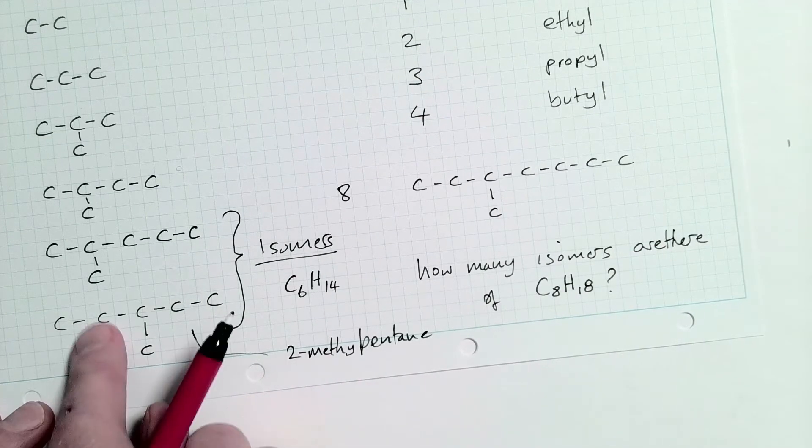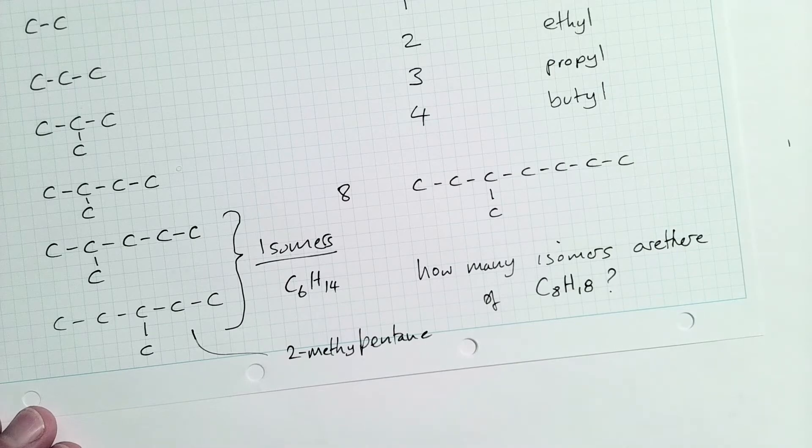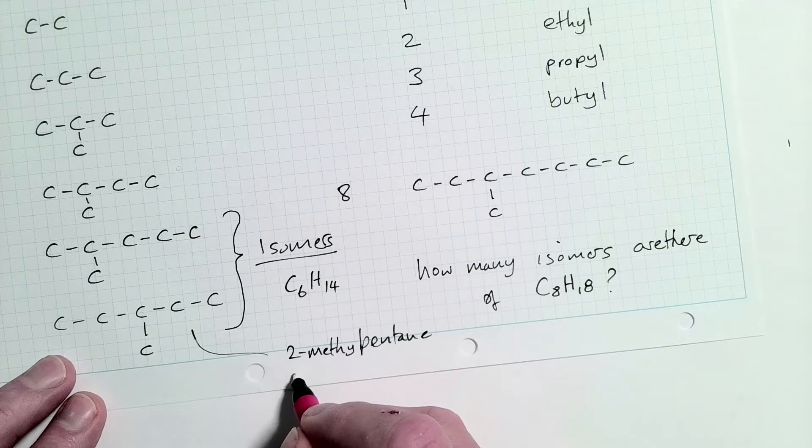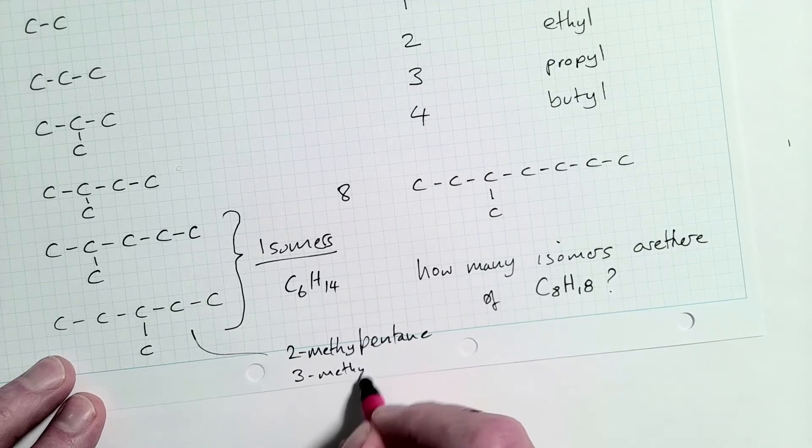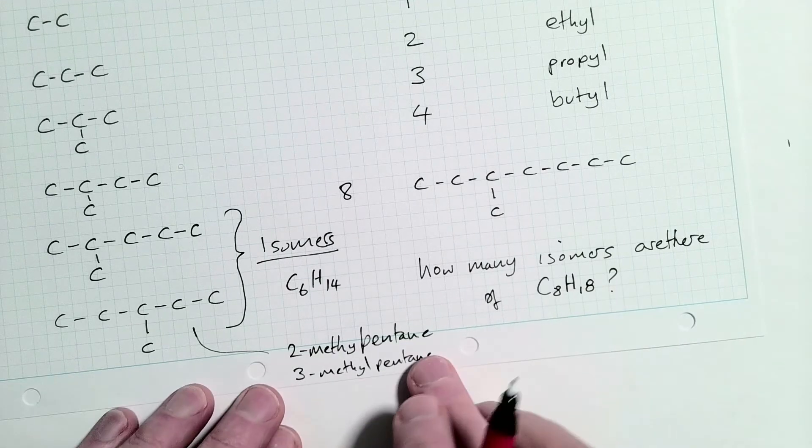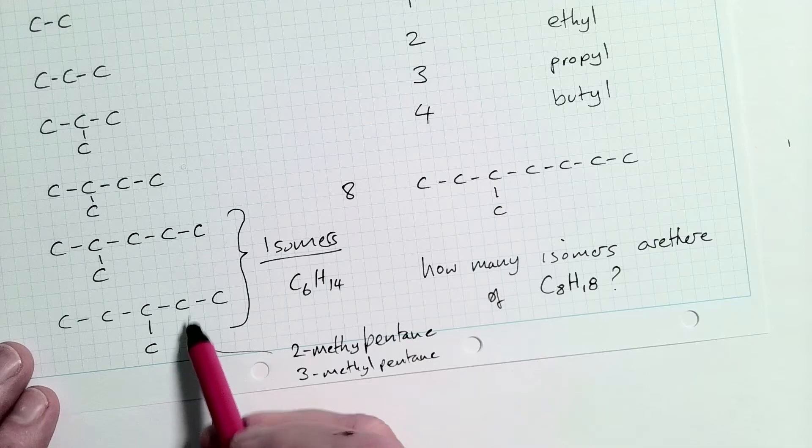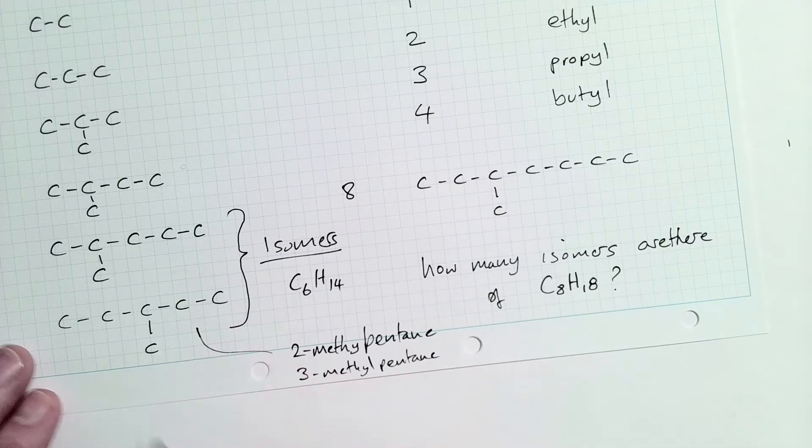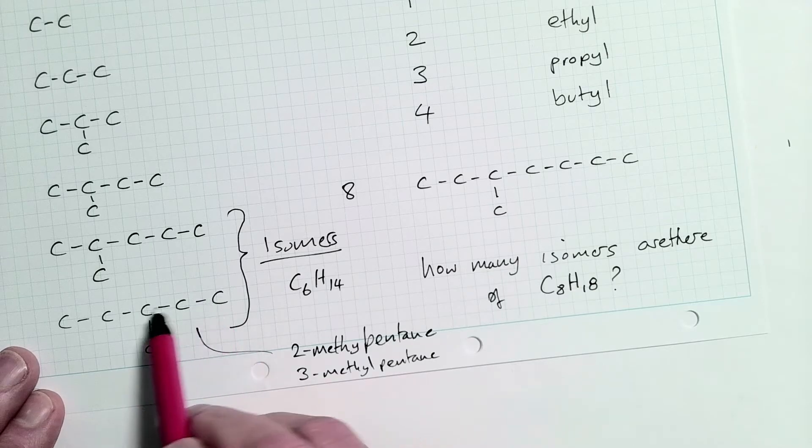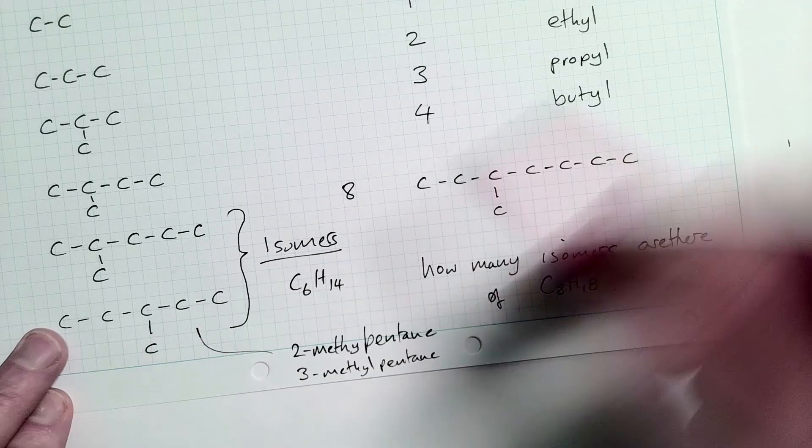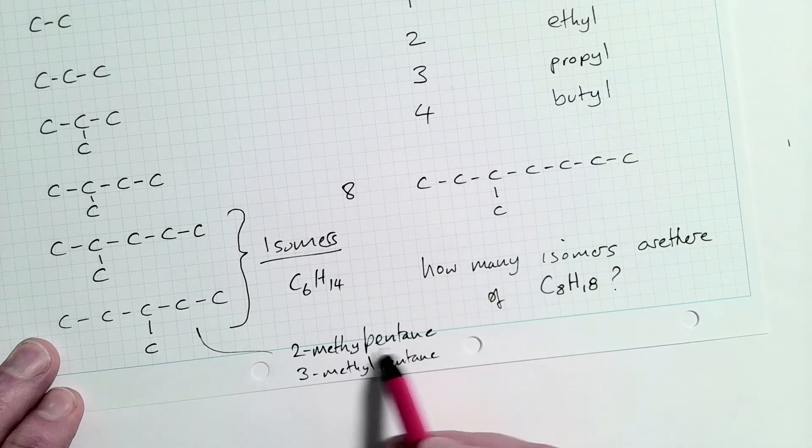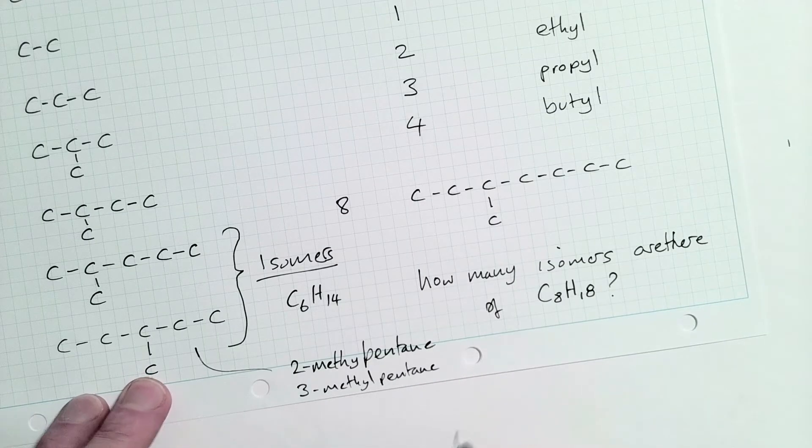All right. Two methyl pentane. This one down here, one, two, three, one, two, three, doesn't matter which way we go. We're going to have three methyl pentane. That's going to be three methyl pentane. Now, it's possible that you could potentially call this butane with an ethyl group on it. But remember, you always pick the longest chain when you're naming the base molecule and then you work out the side branches.